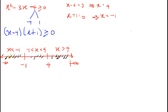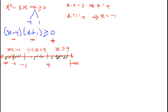To choose the correct range, we test values. Let's test x equals minus 5 from the region x less than minus 1. Substituting minus 5: minus 5 minus 4 equals minus 9, which is negative. Minus 5 plus 1 equals minus 4, which is also negative. Negative multiplied by negative gives positive, which satisfies the inequality.